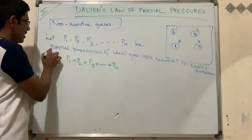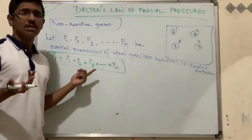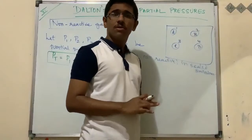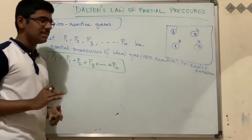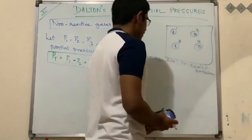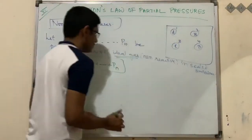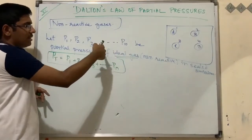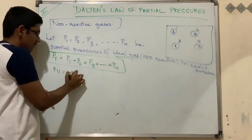This is Dalton's law, but now we need to modify it. In examinations, individual pressure values are not given directly — it's very difficult to calculate them that way. So we modify the law according to our needs. Since the gases are ideal, they obey the ideal gas equation pV = nRT.